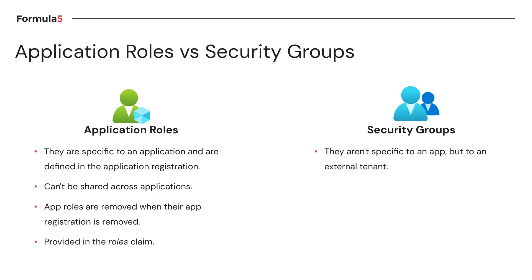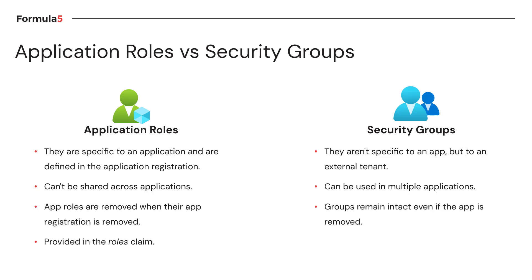On the other side, we have security groups. They aren't specific to an application but to an external tenant. You define security groups globally in your Microsoft Entra External ID and can use them among different kinds of applications, meaning one security group can be used by multiple applications. Groups remain intact even if the application is removed — security groups are independent of app registrations. Information about security groups is provided in the groups claim in the ID and access tokens.